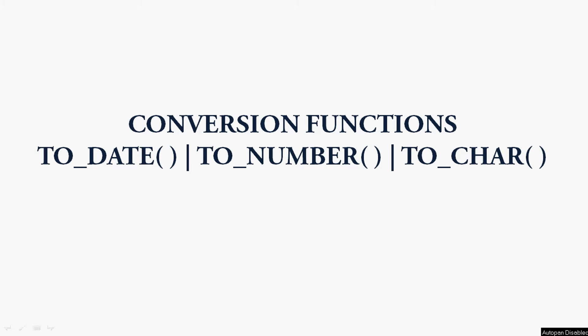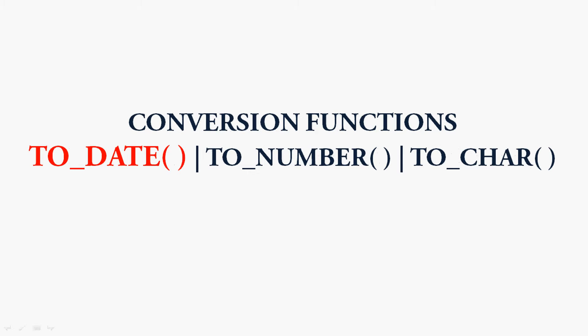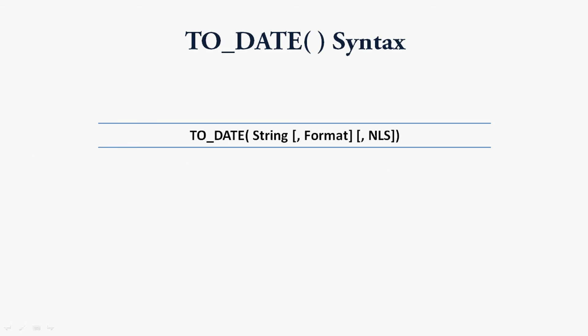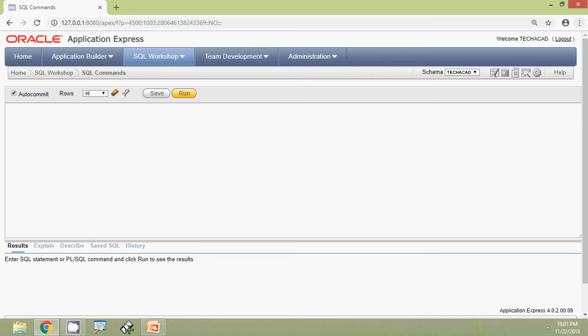Hi friends, welcome to Oracle tutorials. In this video we are going to see three conversion functions: TO_DATE, TO_NUMBER, and TO_CHAR. First of all we will see the conversion function TO_DATE. This function converts a string to a date. Here we can see the syntax: TO_DATE of string, then two optional parameters — first one is format and second one is NLS, that is native language support. We will see some examples using Oracle APEX.